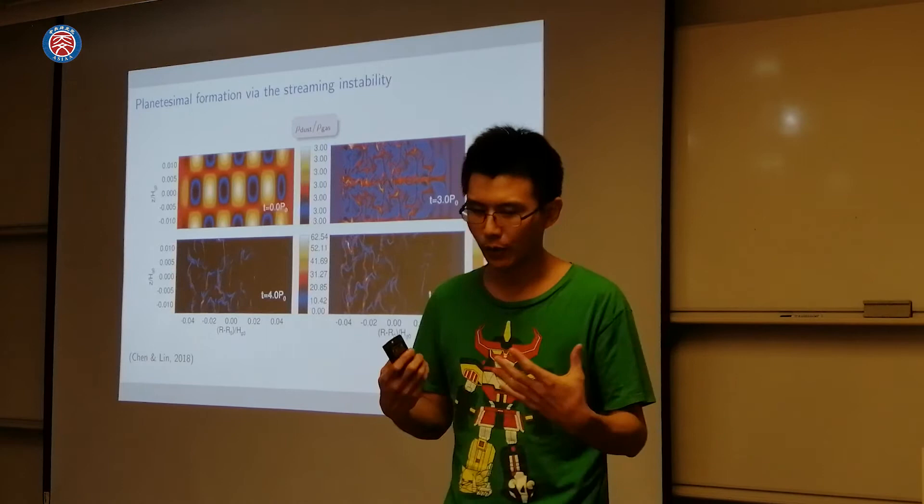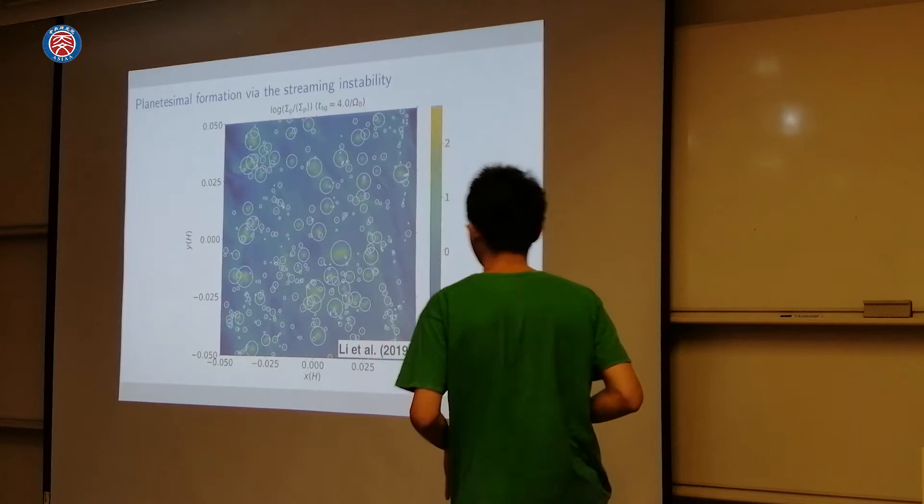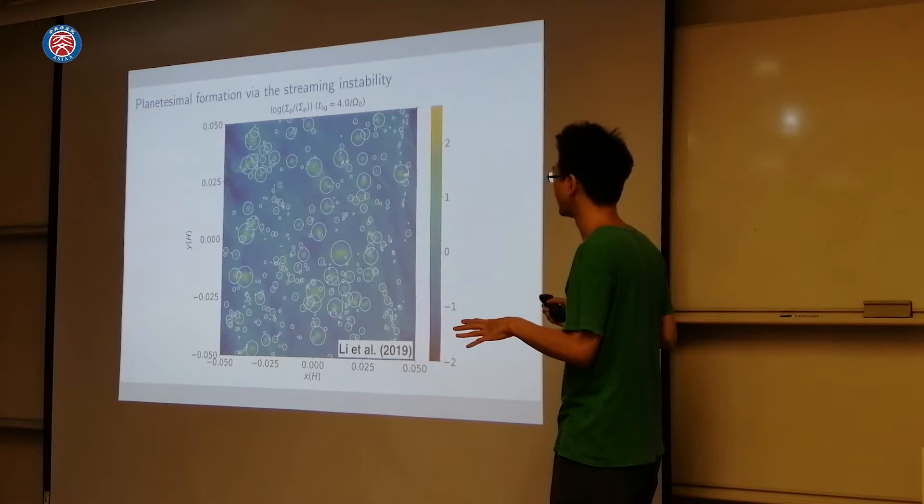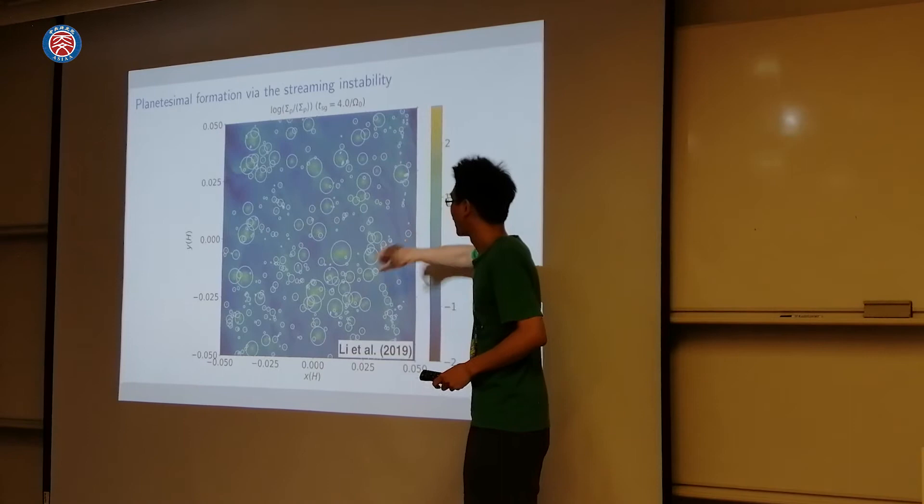This is a much more sophisticated simulation showing that this mechanism does actually work. This was a paper put out by Li Zhixing last year. He ran high-resolution simulations of the streaming instability including self-gravity, and you can see that he successfully makes a lot of planetesimals.